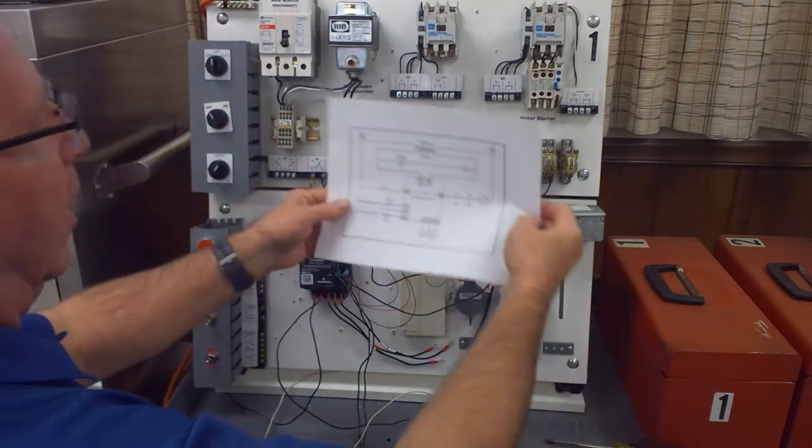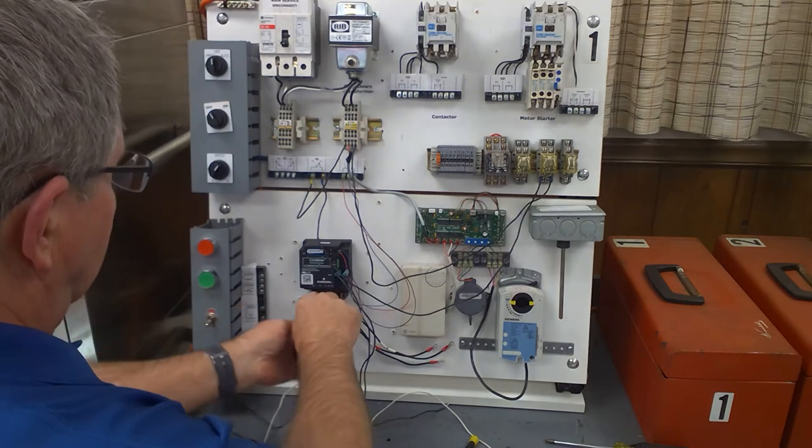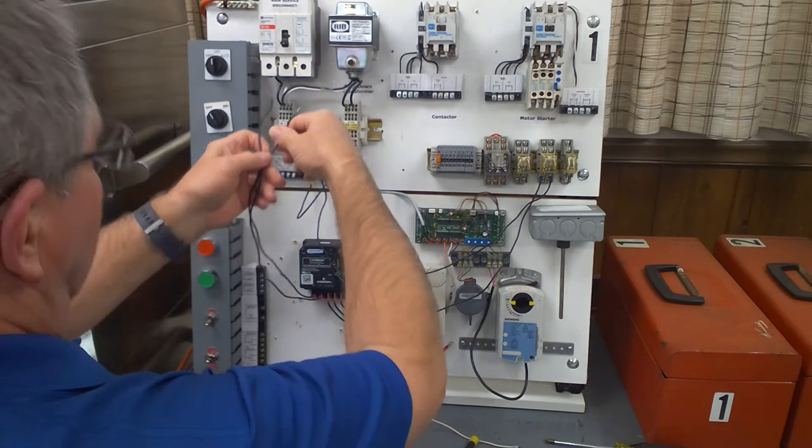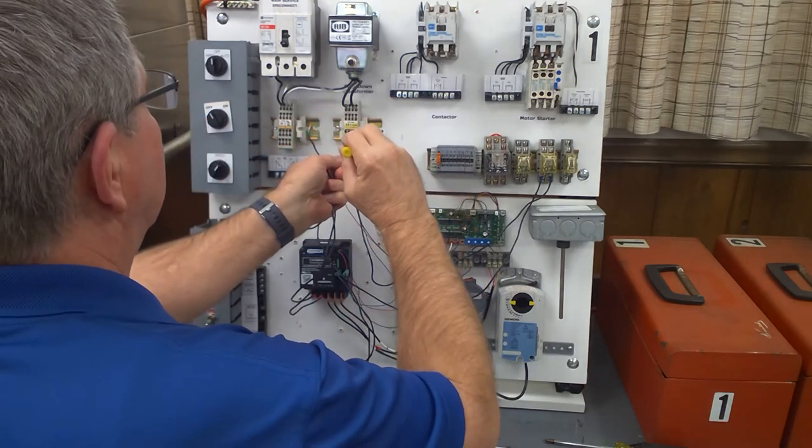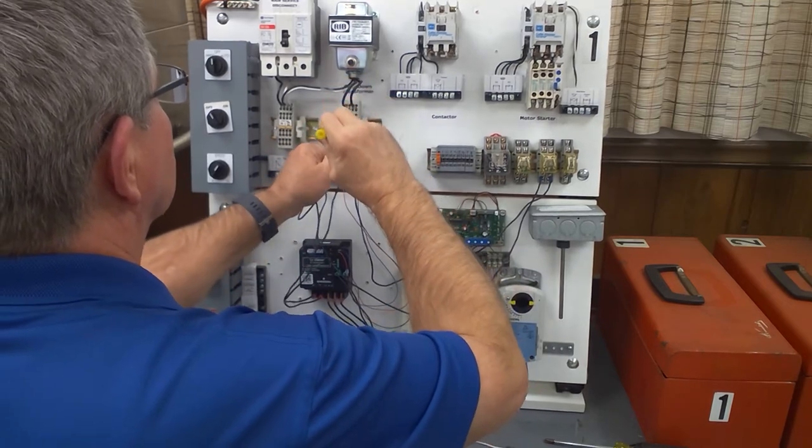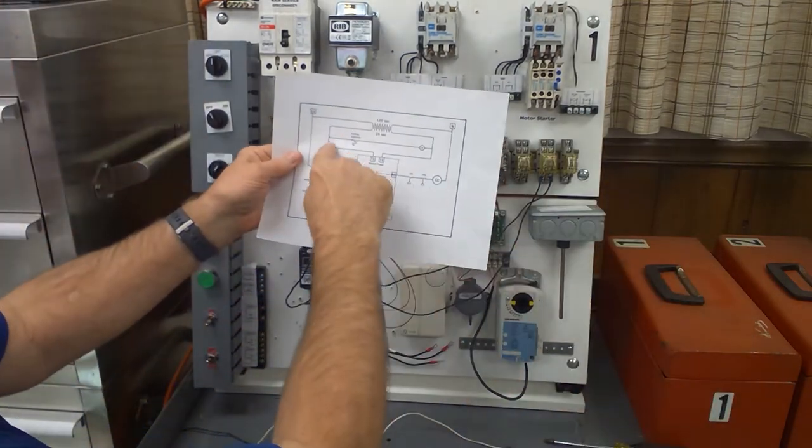Next thing in our drawing is to get 24 volt power to the module. Here is terminal T2, T1. Here's the wires that I've already got plugged in there, so I'll take this one and I'll hook it to the common 24 volt. This will go to the power 24 volt.